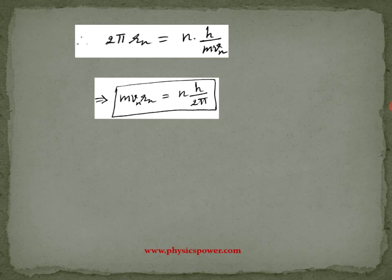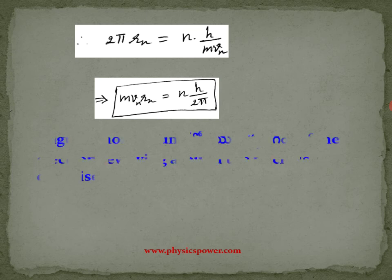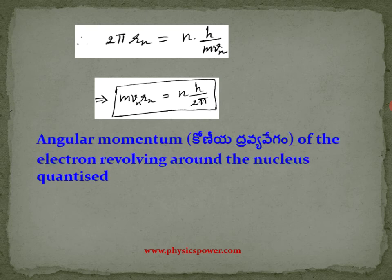So, the angular momentum equals n times h by 2π — an integral multiple of a particular quantity. Therefore, the angular momentum is quantized.